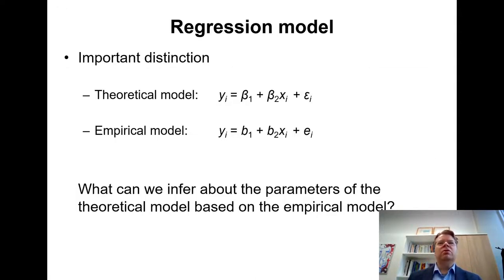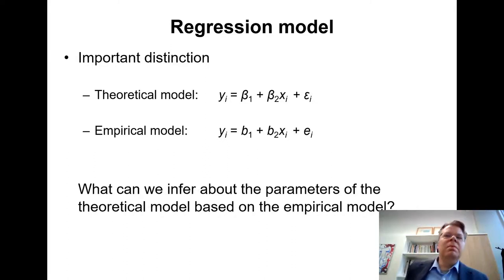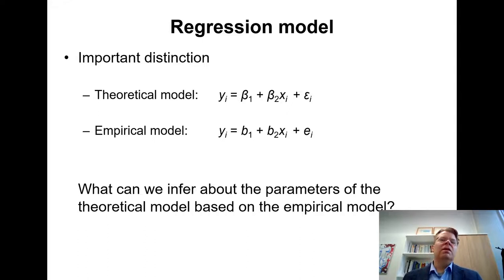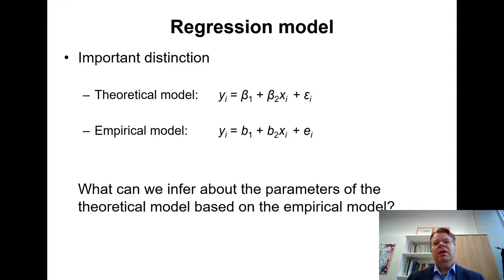Now going back to the context of regression: in the empirical model, the slope coefficient B2 is calculated as the sample covariance between X and Y divided by the sample variance of X. Everything mentioned before is of course very relevant. The question then is: what can we infer about the parameters of the theoretical model? What can we say about the true beta 2 based on our empirical estimate of B2?